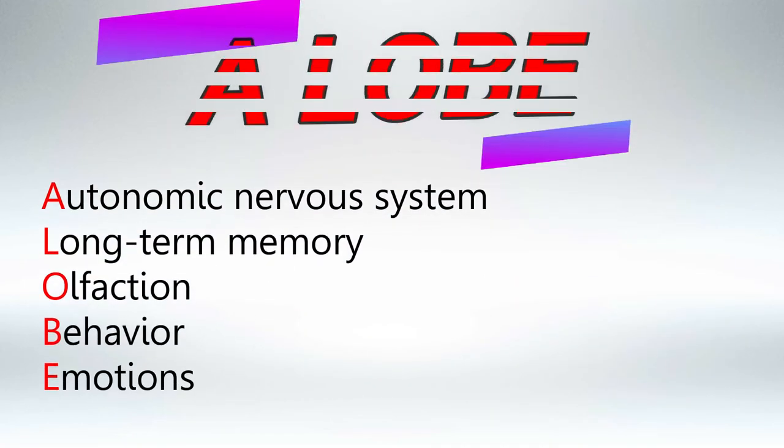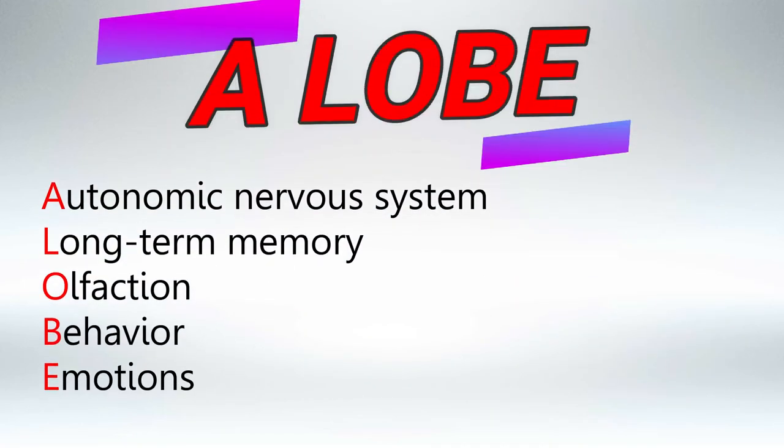To remember the functions, remember that the limbic system has a loop worth of functions. So A for autonomic nervous system regulation, L for long-term memory preservation, O for olfaction, B for behavior, and E for emotions.